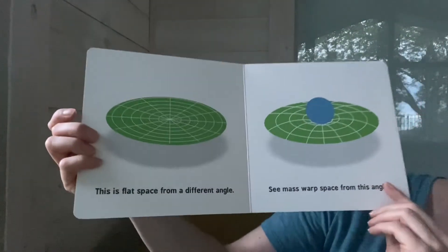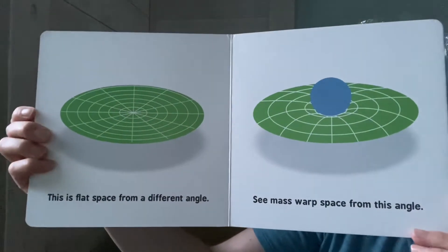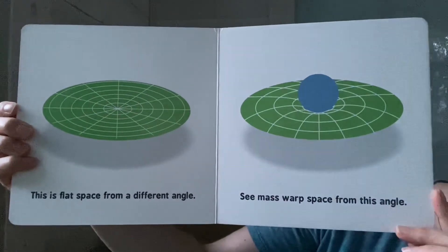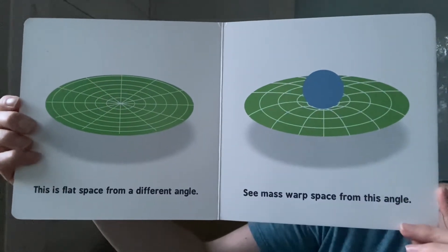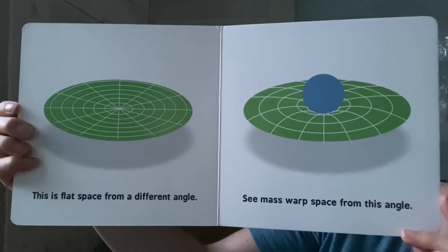Mass. This is a flat surface from a different angle. See mass warp space from this angle.